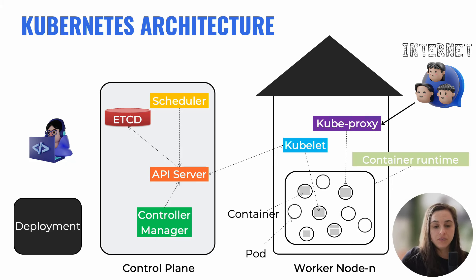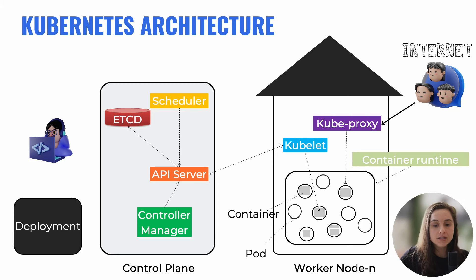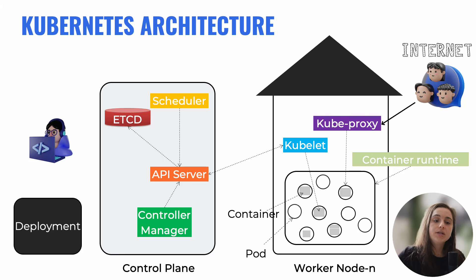On the left, we have the control plane, which is mainly the brain of the cluster, managing its overall state and orchestrating operations. In the control plane there are a few elements: first, there is the API server that acts as the front-end for Kubernetes — it accepts and processes REST API commands, validates them, and updates the corresponding object states. We also have a scheduler that assigns workloads to nodes based on available resources and policies. We also have a controller manager that monitors the cluster state, making sure the desired state matches the actual state and handles events accordingly. Finally, in the control plane, we also have etcd, a distributed key-value store that stores the cluster's configuration data and state — it's like a database that manages all the states in Kubernetes.